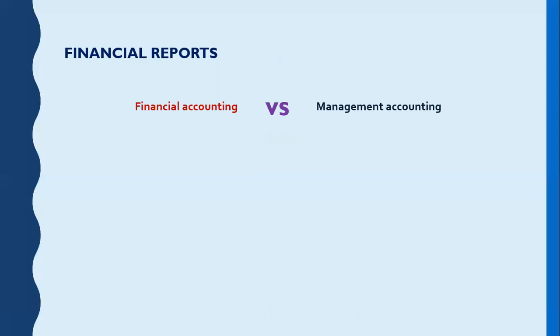The next thing we need to learn is the content of financial reports. But before we learn this, we need to know how to differentiate financial accounting and management accounting. Financial accounting is about preparing financial reports for external users to make them know what our company did and what our company has. Management accounting is about preparing reports to the senior managers so that they can make their decisions to run the company. In this course, we're going to learn financial accounting.